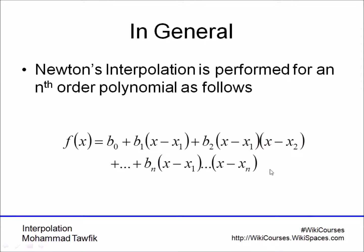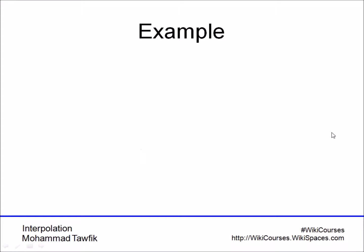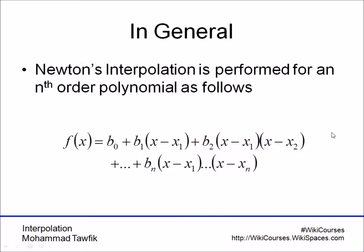Until you get the n plus 1th term, which includes the x to the power n. So now you have those n plus 1 terms for a general polynomial, and you can use them to generate the constants just following the same procedure we have followed before.